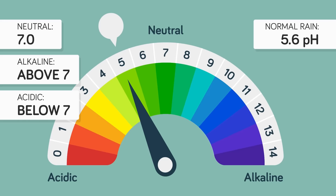But acid rain has a pH between 4.2 and 4.4, so it's much further down the scale.